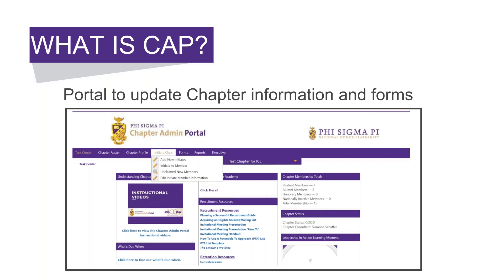First things first — what is the Chapter Admin Portal? The Chapter Admin Portal is a portal where eBoard members and officers turn to in order to update their chapter information when it comes to addresses and rosters, and also where they turn in any of the upcoming forms that are due. It's important to note that not every member has access to the Chapter Admin Portal.